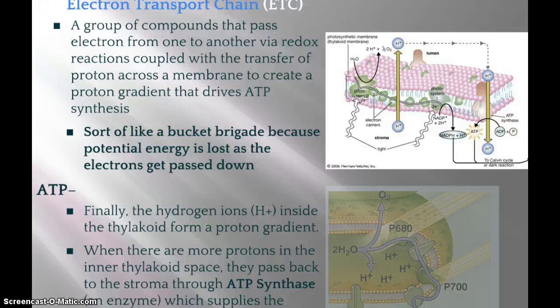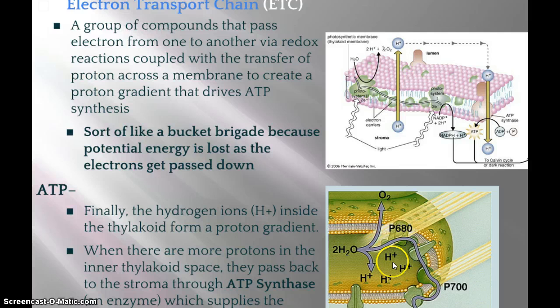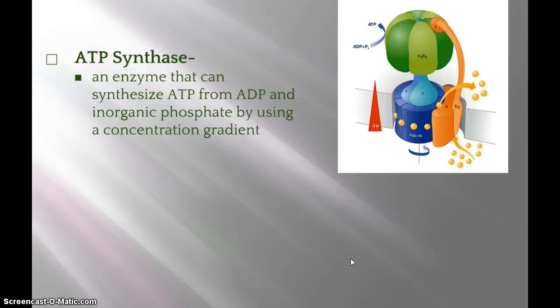The hydrogen ions going through ATP synthase provide the energy to make ATP. ATP synthase is an enzyme that makes ATP from ADP and inorganic phosphate, and it works when there are more hydrogen ions in the inner thylakoid space than on the outer space.